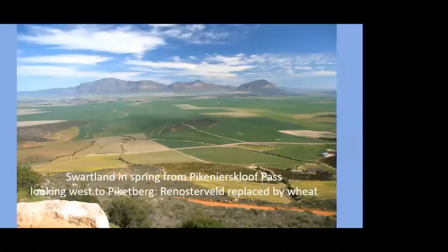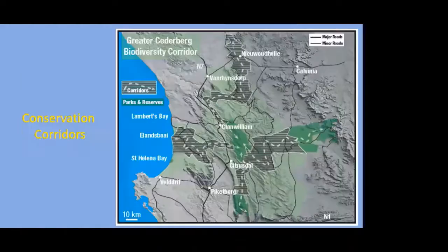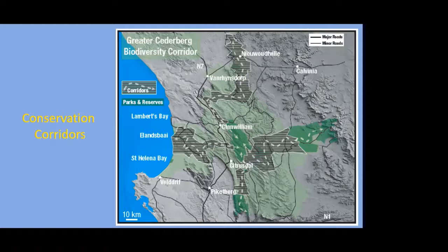This image from Pekoniers Kloof Pass — looking west — shows the Swartland with all its crops, and across to the Picketberg dominated by quartz sandstone rocks and the fynbos community, which is relatively pristine. The clay-rich, weathered Malmesbury rocks in the lowlands are heavily farmed. One effort to help conserve what remains — and to try to prevent extinctions from human activities — is the idea of biodiversity reserves: nature reserves and national parks, and then constructing conservation corridors that link these areas.